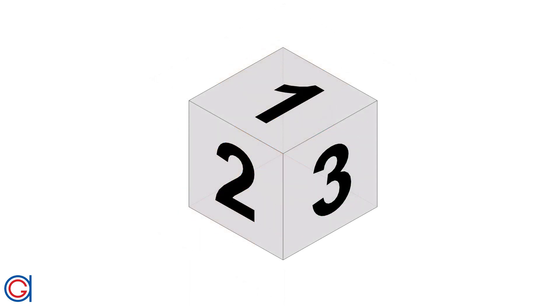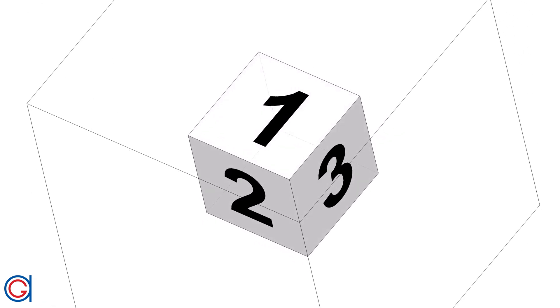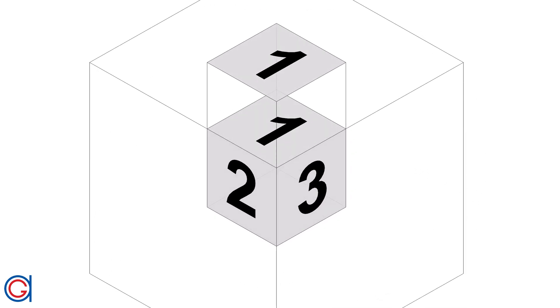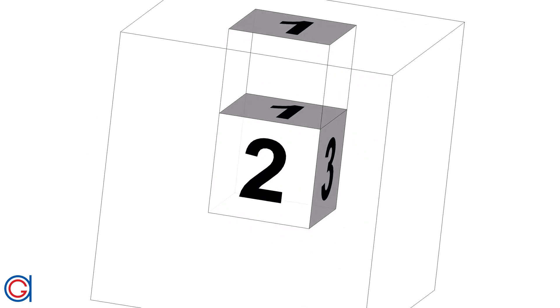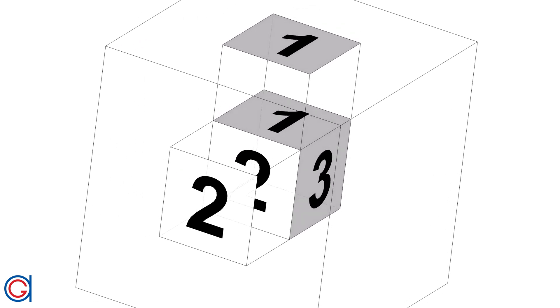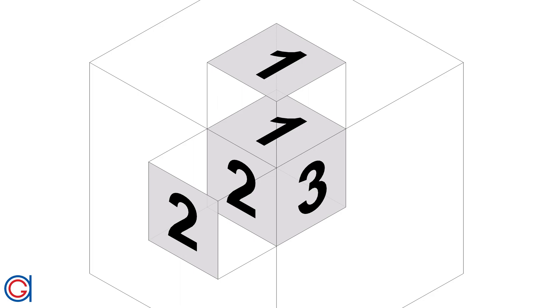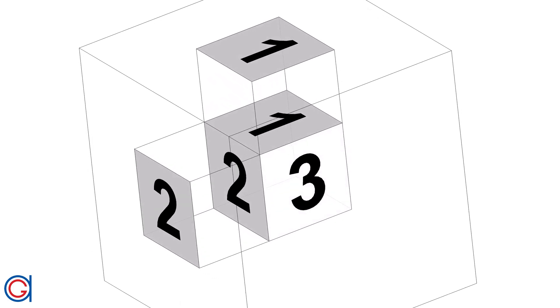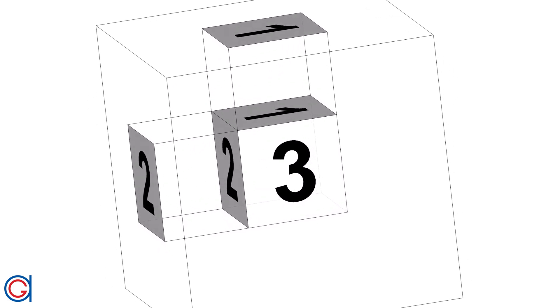Let's start with this numbered cube. We are going to project the three numbered faces to the corresponding planes of projection. In this animation you can easily see each face being projected onto its corresponding plane. Imagine a bigger transparent cube in which the faces are the different projections, as can be seen here in the on-screen animation.